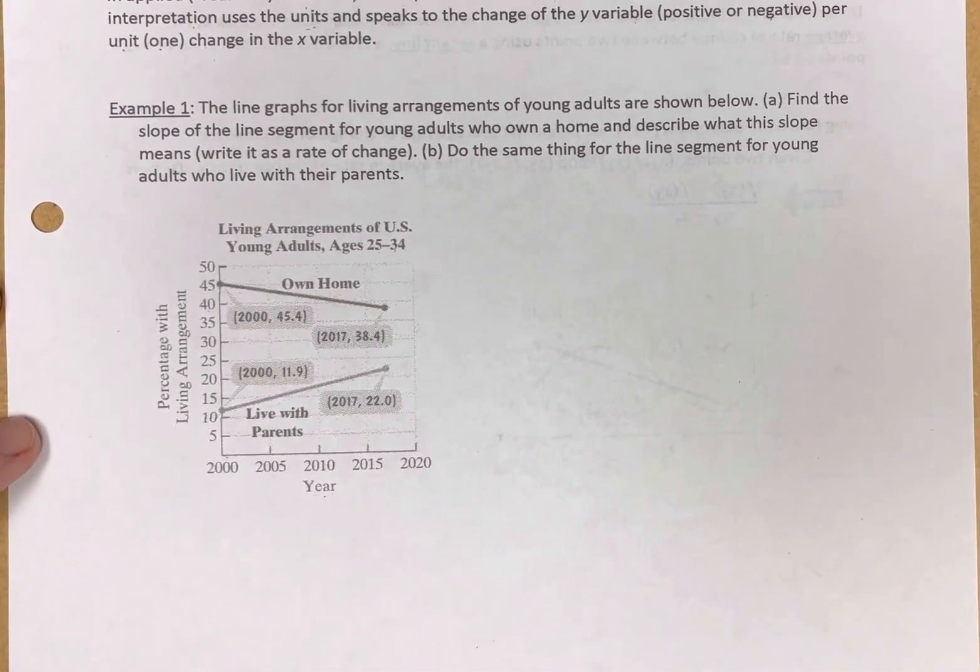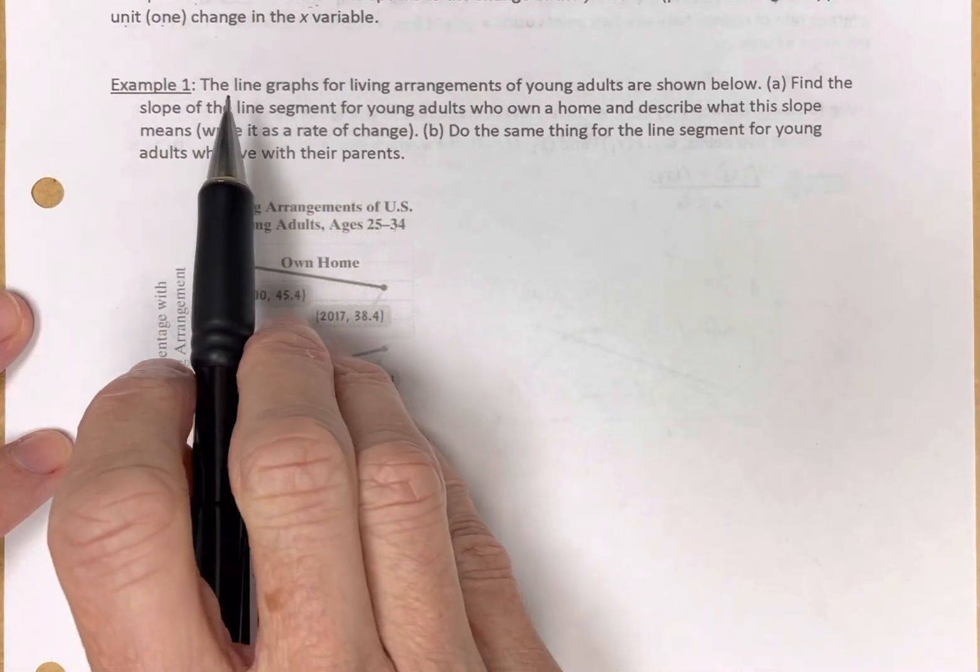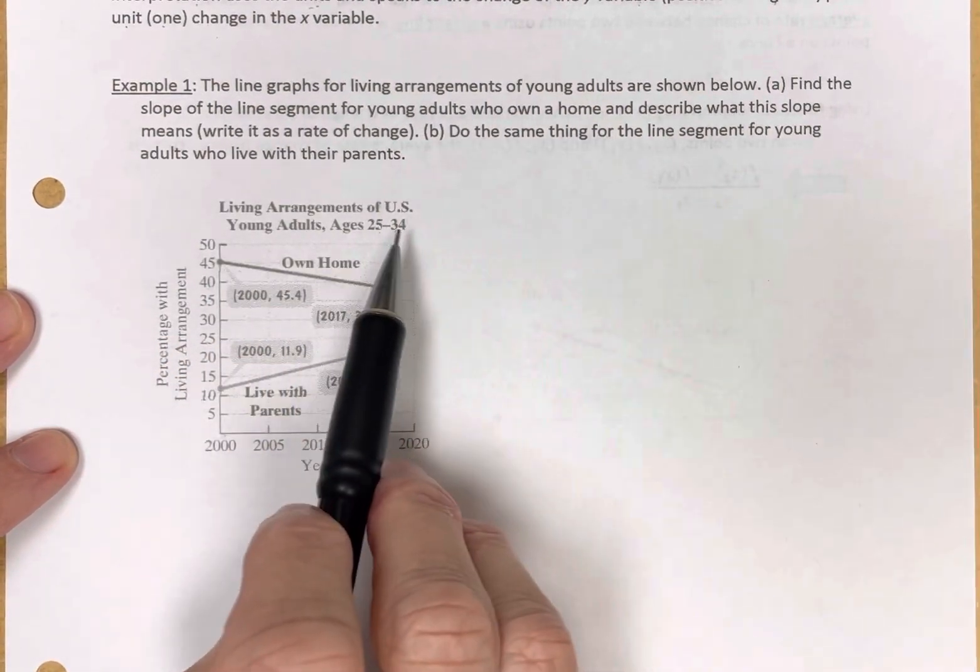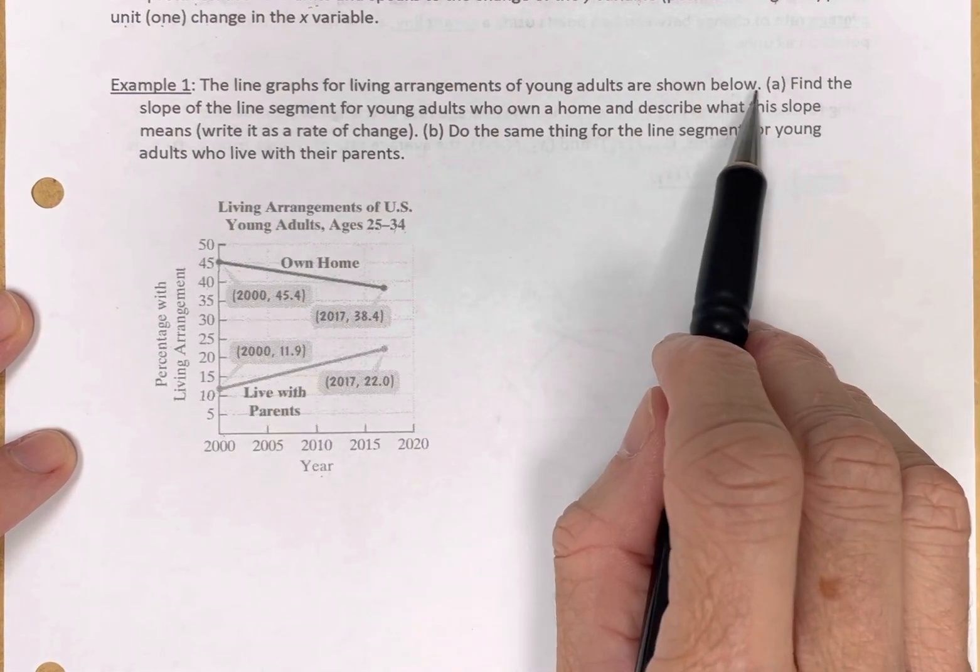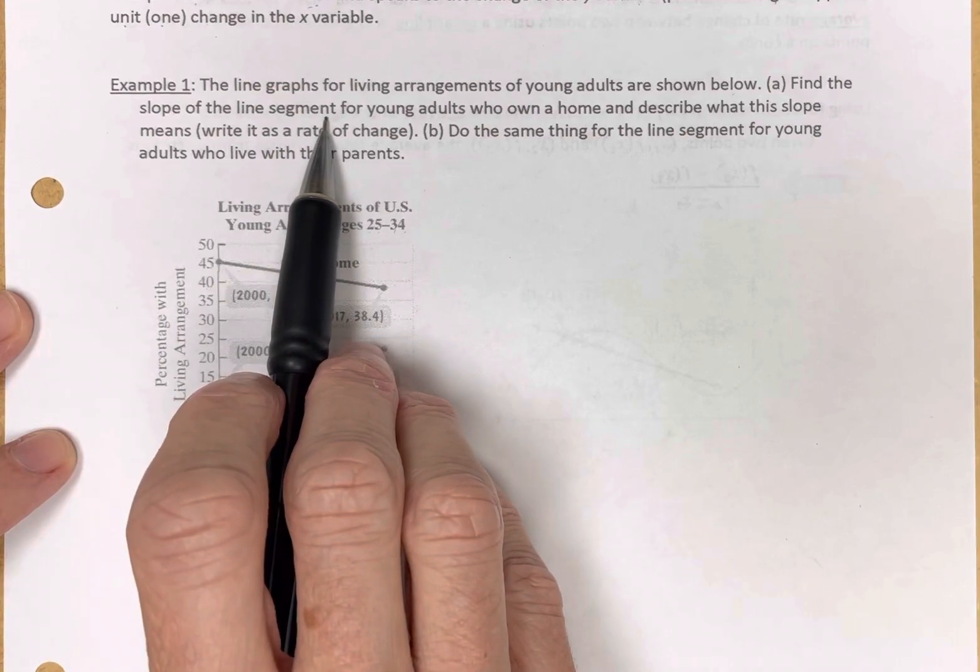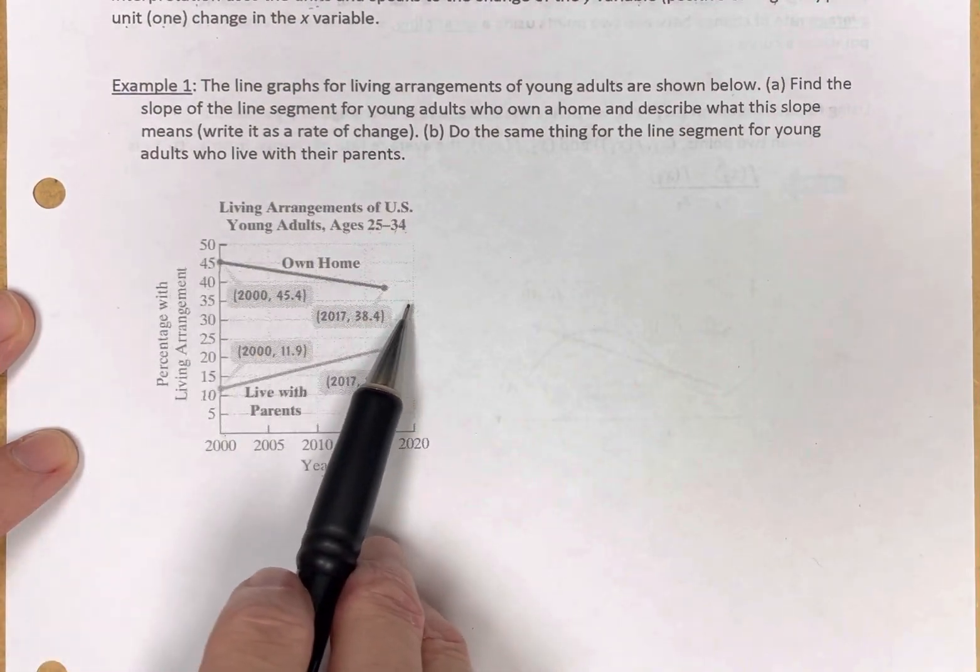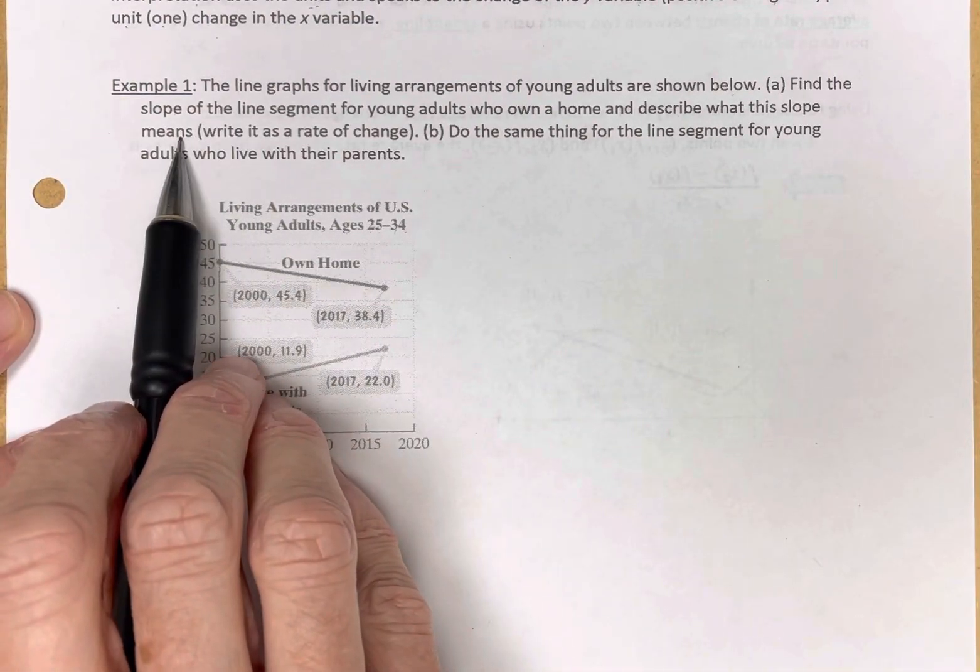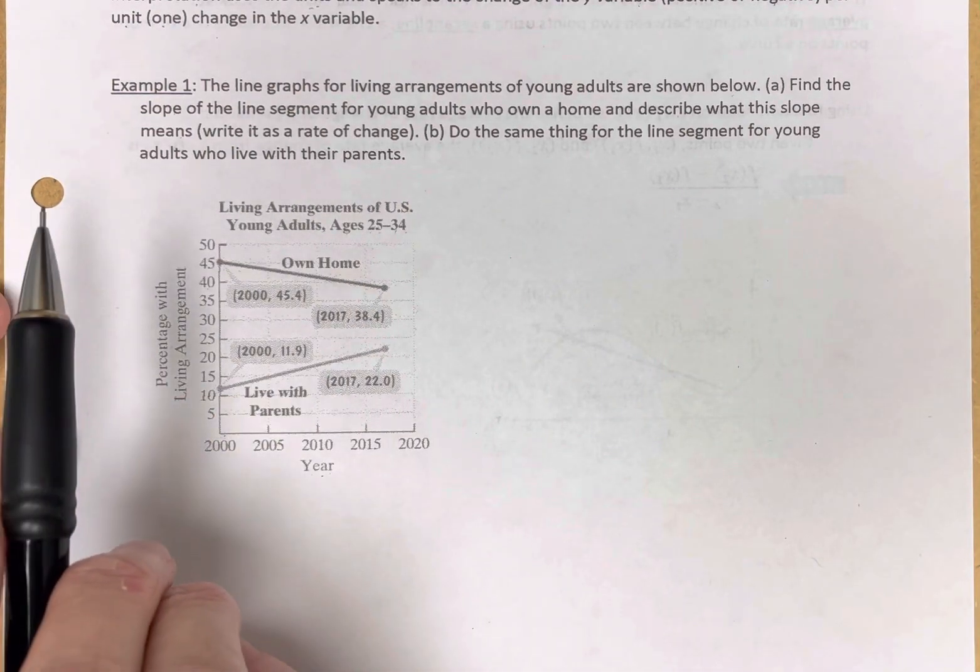Okay, let's look at our example here. Let's get into some young adults and what are their living arrangements. The line graphs for living arrangements of young adults between 25 and 34 are shown below. So letter A, find the slope of the line segment for young adults who own a home, that's going to be this line segment, and describe what this slope means. In other words, write it as a rate of change, as if you're speaking to someone.